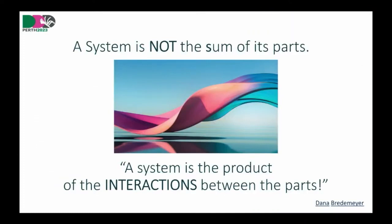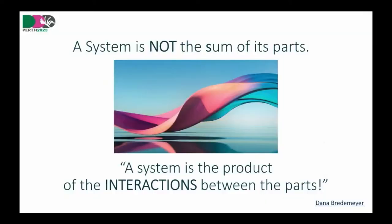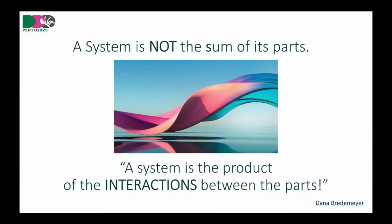The next extremely important point from system thinking — and I heard it from Dana Brennemeier — is that a system is not the sum of its parts. A system is the product of the interaction between parts. You don't need to know the systems; you need to know what happens when they interact. The system here can be a piece of technology, a human, or an organization — the same principles apply. It's all about: can I model and describe the interaction, and what is the outcome of the interaction?